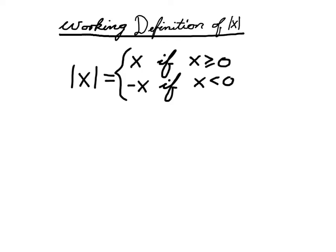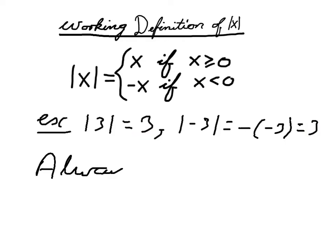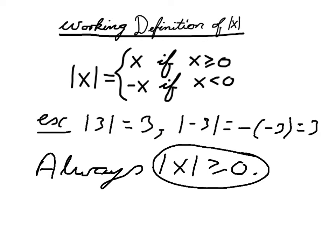For example, the absolute value of 3: since 3 is non-negative, we use the first formula, so that equals 3. And the absolute value of minus 3: since minus 3 is negative, we use the second formula, giving minus minus 3, which is just 3. So no matter what you plug in, you always get a non-negative number — and we'll make use of that in a few moments.